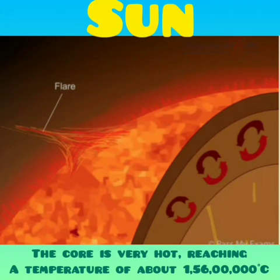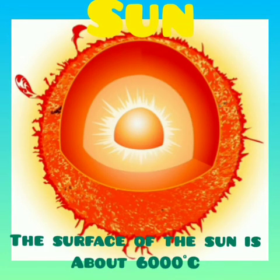Sometimes cooler, darker patches called sunspots appear on the surface. Sometimes great blasts of energy called solar flares erupt from the atmosphere of the Sun.